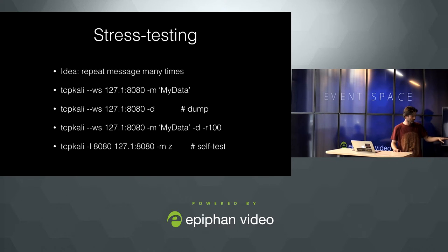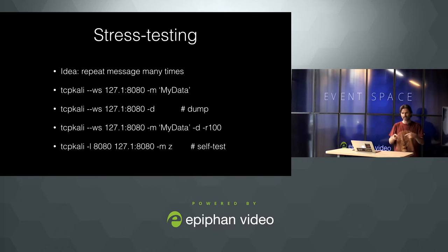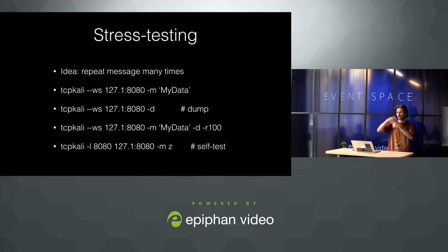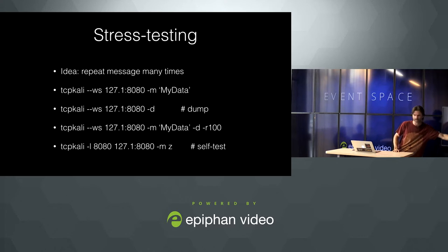I will show you how it works. TCP-cali can work in server mode and in client mode. The last example shows how to test itself — it opens a listening circuit, opens an active circuit, connects them together, and tries to send as much traffic as possible, consisting of z's.